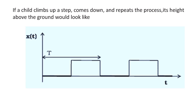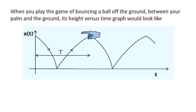If a child climbs up a step and then comes down and repeats the process, its height above the ground would look like as I have drawn in the following graph. When you play the game of bouncing a ball off the ground between your palm and the ground, its height versus time graph would look like the following XT graph.